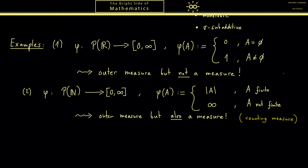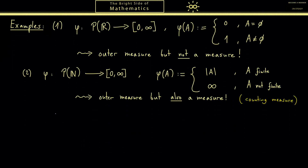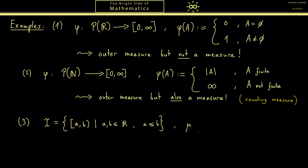So let's go to the important example 3. Maybe you already guessed it — it should have something to do with the Lebesgue measure. The best starting point is the one-dimensional Lebesgue measure, the measure we use to measure normal lengths. For intervals we can write down the length immediately, so we consider the set of all bounded intervals, which I call the curved I. For the length of such an interval we use a function mu, so mu of an interval is given by b minus a — the normal length of an interval.